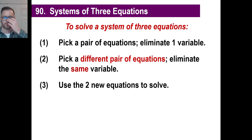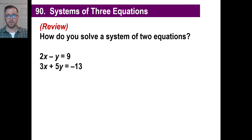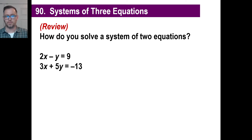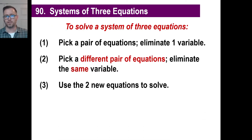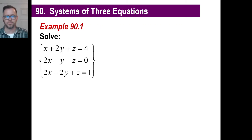Last step: use the two new equations to solve. When you have two equations with two variables, you know how to do that — substitute or eliminate or whatever. What you're going to have is three equations with x's, y's, and z's. You take two of those equations and eliminate, say, the z's. Then take another two equations and also eliminate the z's. So what you'll have is two equations with x's and y's, or x's and z's, or y's and z's — it doesn't matter. You can solve them that way.